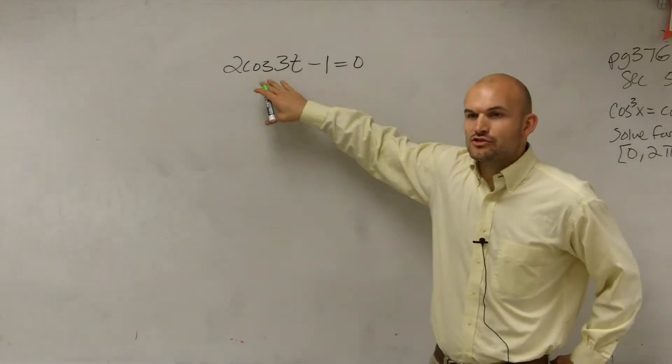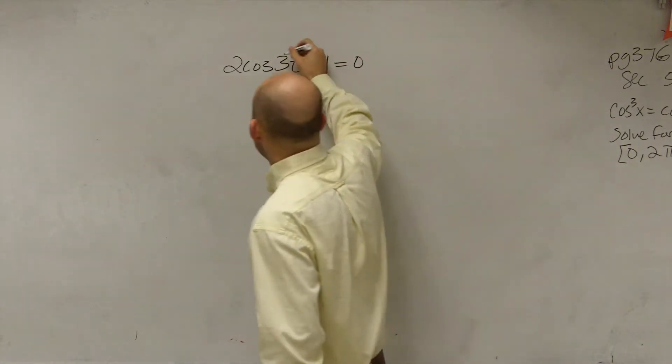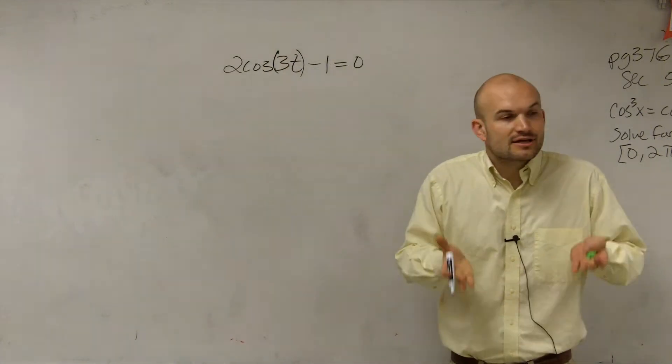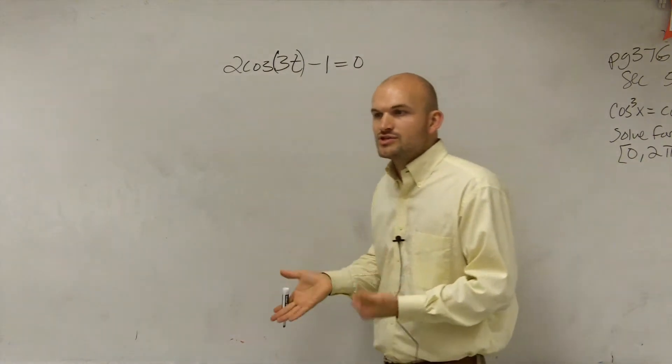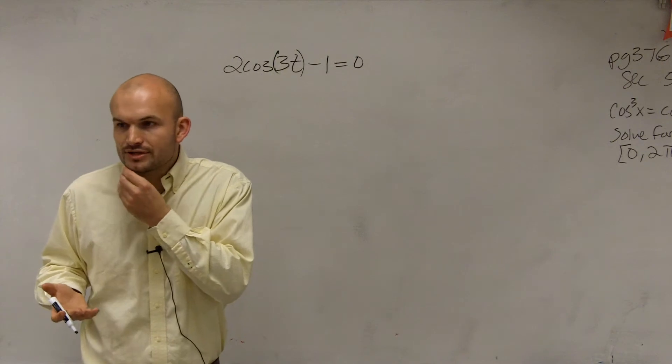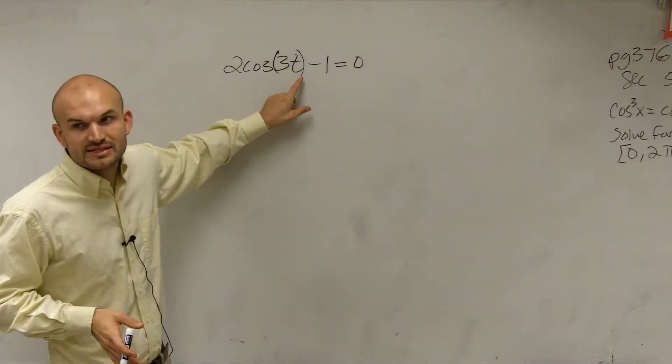However, we know that we have this 3t. But remember, the 3t, that is within your function, right? You're taking the cosine of 3t. So unfortunately, we can't undo that until we get rid of our cosine function. Until we undo the cosine function, then we can undo the 3t.